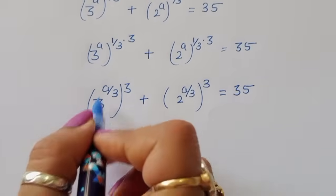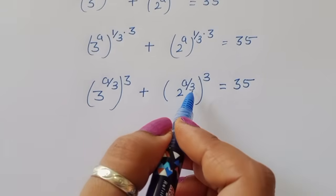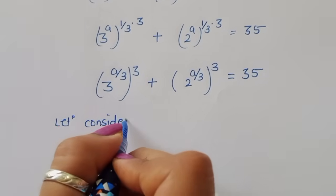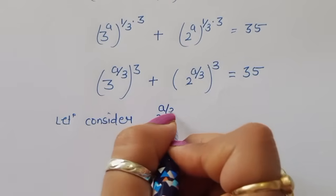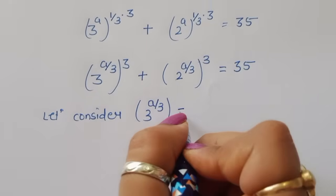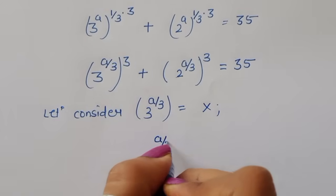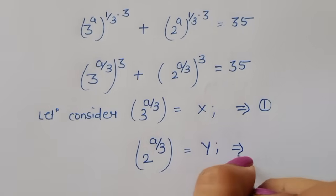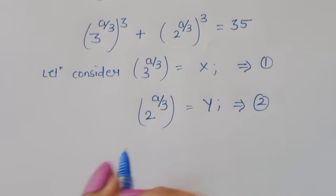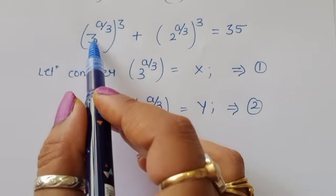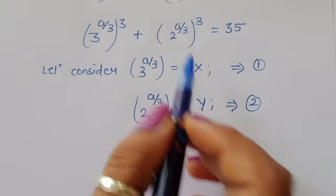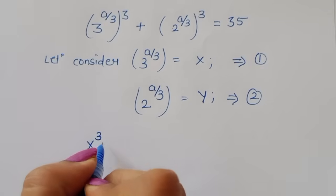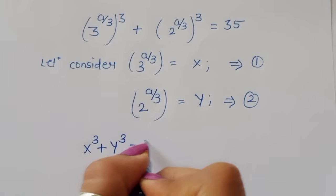Now let's consider 3^(A/3) = x and 2^(A/3) = y. These are equation 1 and equation 2. So we can write x³ + y³ = 35. The equation becomes x³ + y³ = 35.